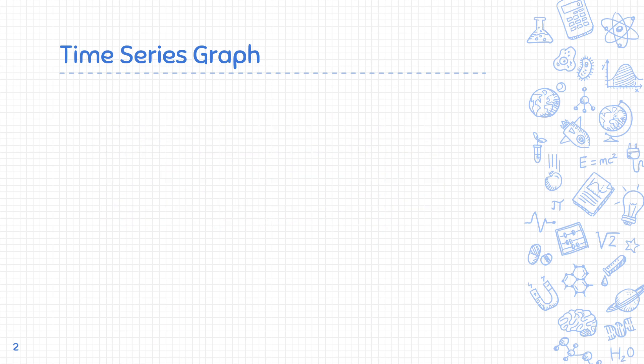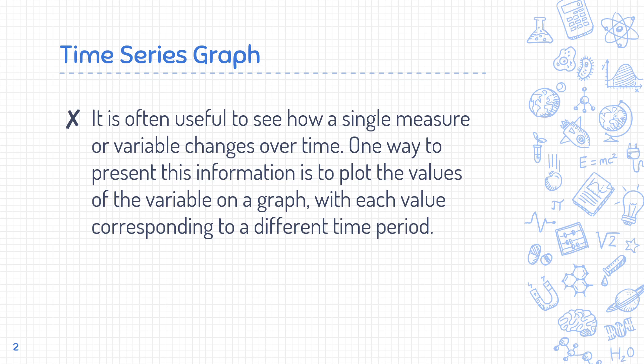In a time series graph, we see how one thing is changing with time. It is often useful — and very important — to see how a single measure or variable changes over time.